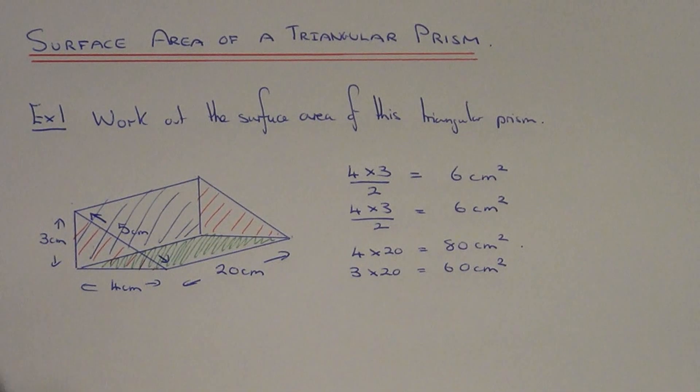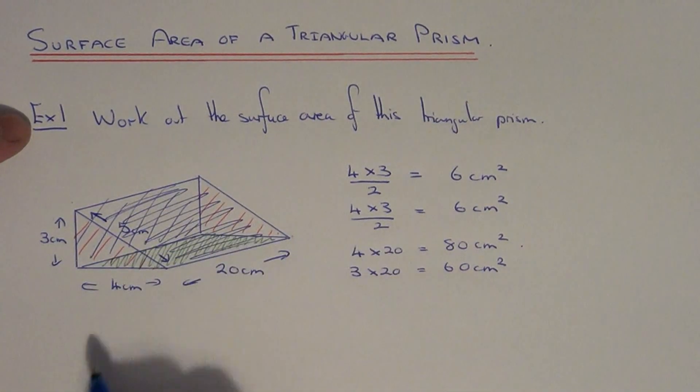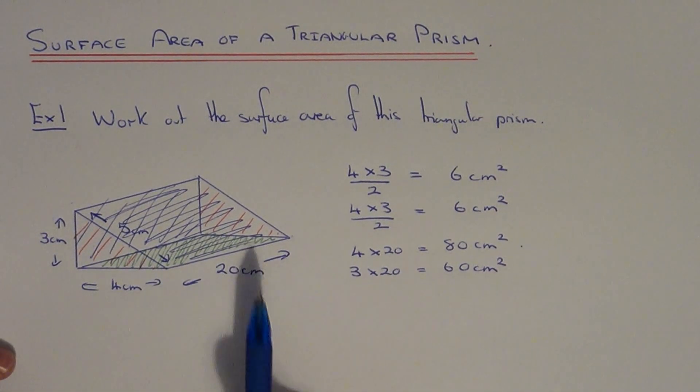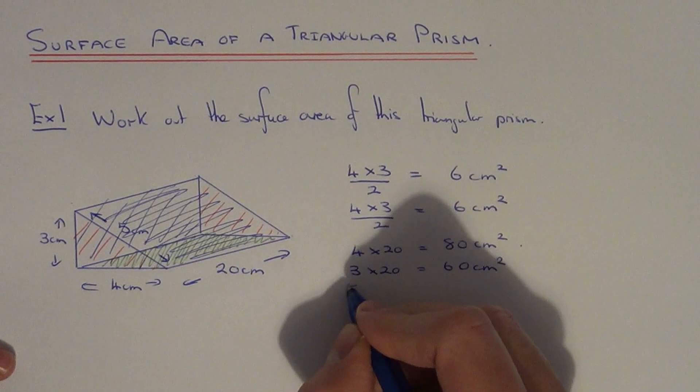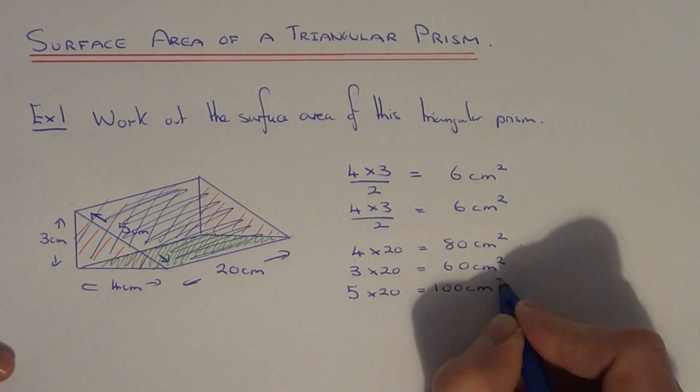And then we've got one final face to do. And that's the one which is the sloping face. So to get this one we can do 5 times 20, which is 100 cm squared.